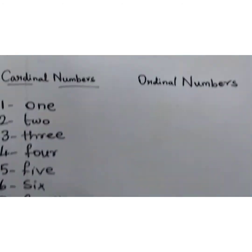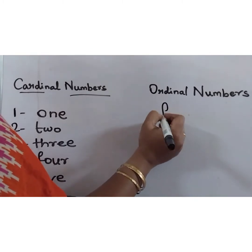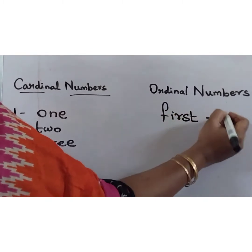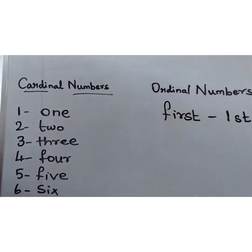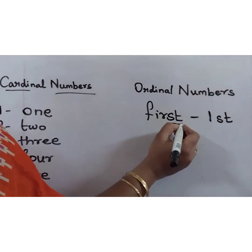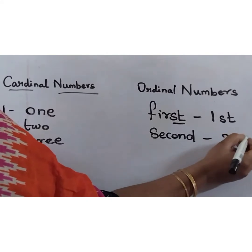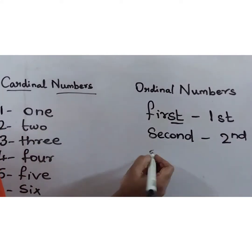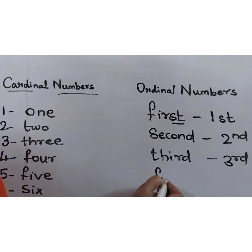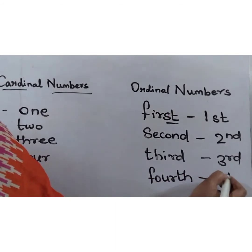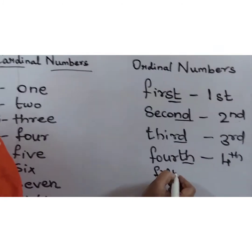For ordinal numbers, they tell us the position or order of something. First — F-I-R-S-T, represented as 1st. Second — S-E-C-O-N-D. Third — T-H-I-R-D. Fourth — F-O-U-R-T-H. Can you see the last two letters? Fifth — F-I-F-T-H.